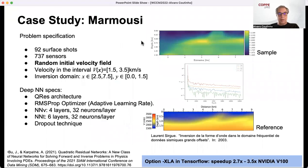As a case study, we have here the Marmousi field, which is a very standard benchmark in geosciences. We have 92 surface shots, 737 sensors. We start with the random initial velocity field. The inverse domain is this rectangular here. This is basically the deep neural network specifications. Here is a Keras architectures, and the optimizer. We have four layers and 32 neurons per layer for the architecture for the velocity, and for the travel times, six layers and again 32 neurons per layer in the dropout technique. You can see one sample of the Bayesian stuff. Here is the loss evolution in the epochs for this sample, and this is a reference solution that we see that we are solving more or less the same thing. Please bear in mind that as any TensorFlow implementation, you have to rely on the XLA option in order to speed up your computation on the current GPUs.